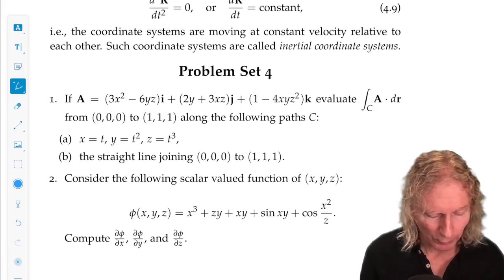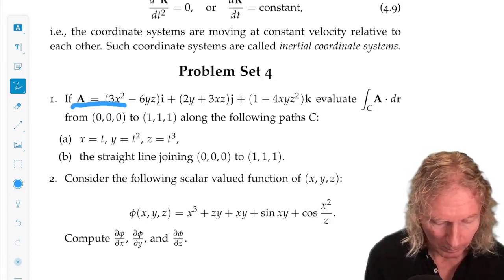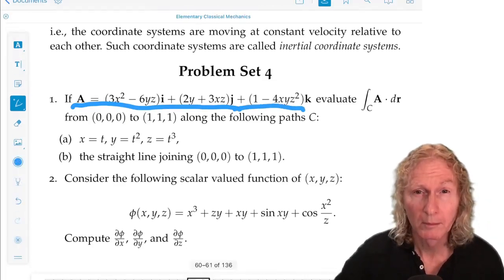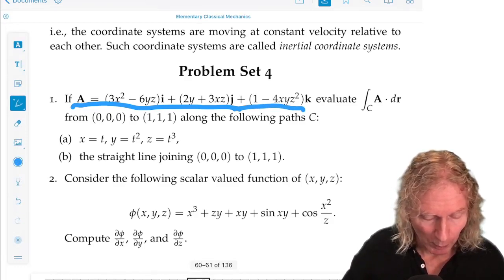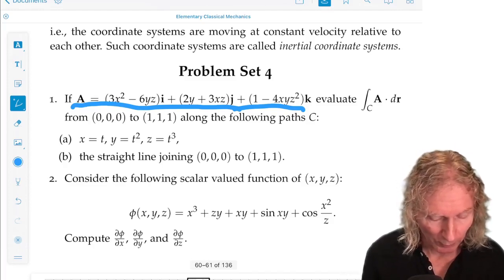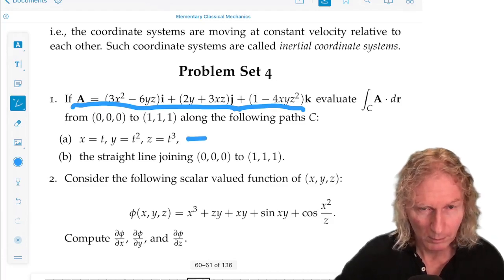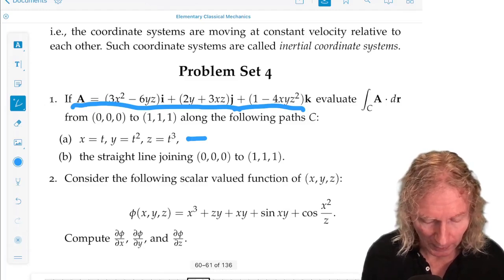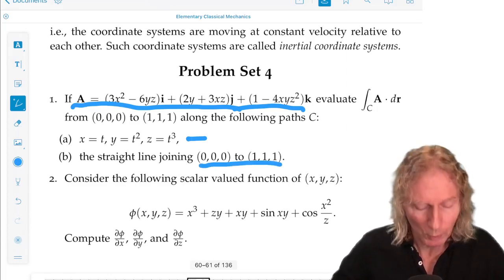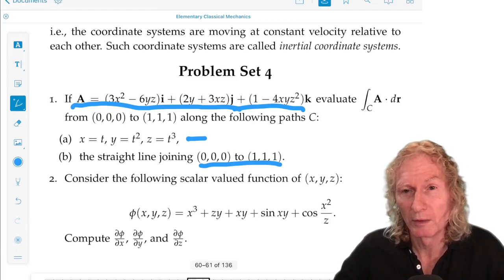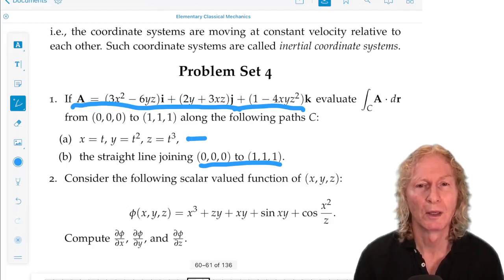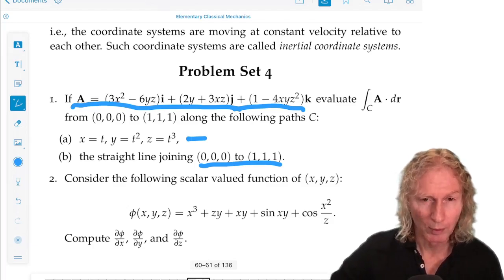In Problem 1, I give you a vector field, and I ask you to compute the line integral from (0,0,0) to (1,1,1) along two different paths. So in the first one, I give you the parameterization, and in the second one, I just tell you what the endpoints are and say just compute it along the straight line joining those points. So you need to do a little geometry about what's the equation for a line in three dimensions that has these two points at the endpoints.